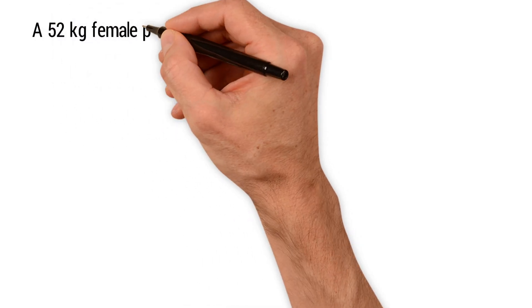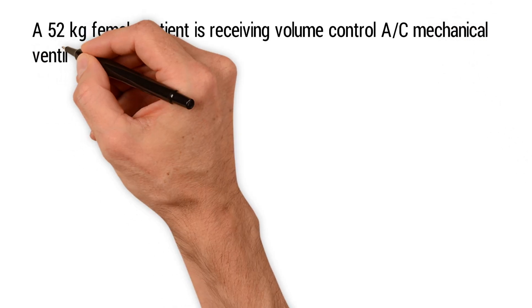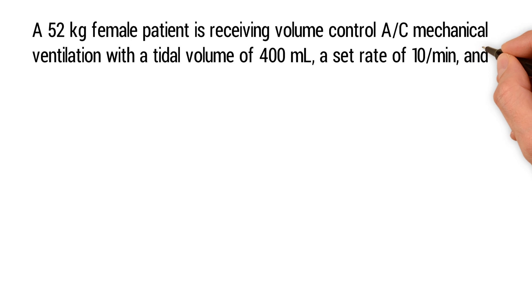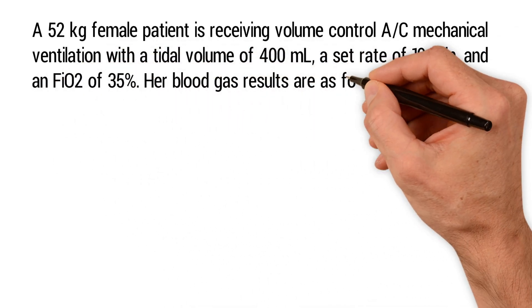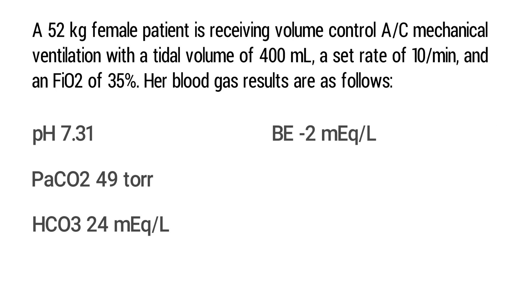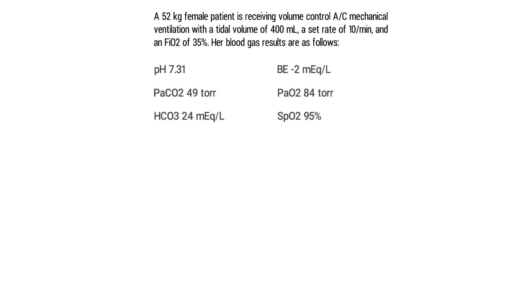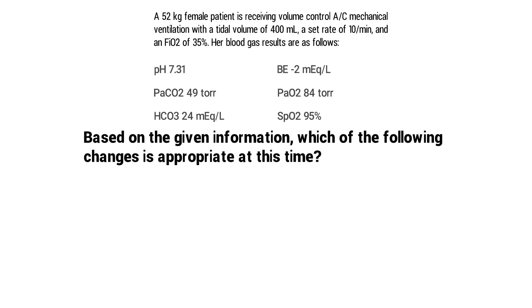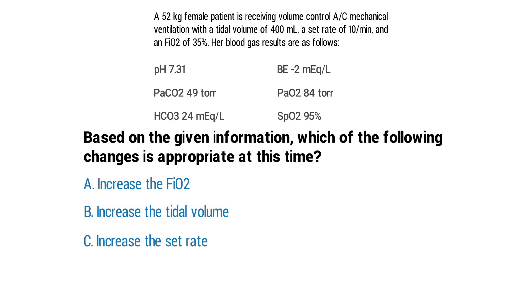A 52 kilogram female patient is receiving volume control assist control mechanical ventilation with a tidal volume of 400 milliliters, a set rate of 10, and an FiO2 of 35%. Her ABG results are as follows: pH of 7.31, PaCO2 of 49, bicarb of 24, base excess of negative 2, a PaO2 of 84, and an SpO2 of 95%. Based on the given information, which of the following changes is appropriate?